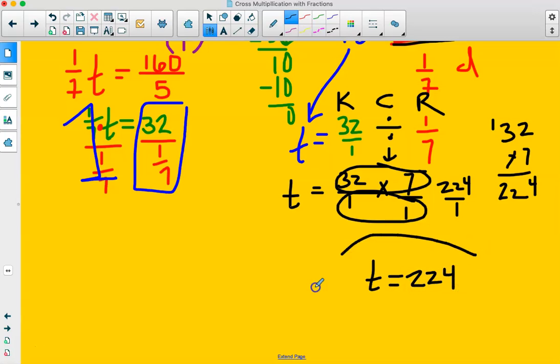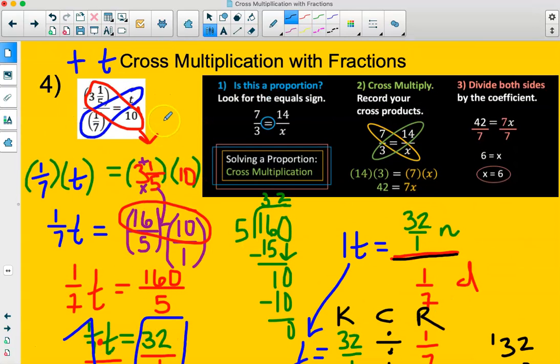224 divided by 1 is just 224. So 224 is my final answer. If you were to plug in 224 in for t, 224 over 10 would be equal to 3 and 1/5 over 1/7.